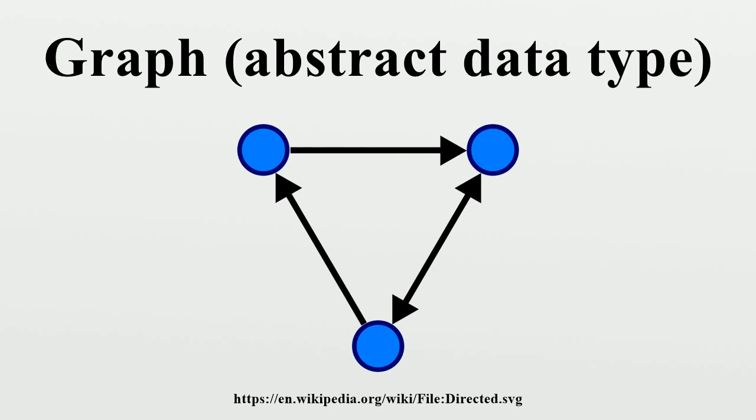The following table gives the time complexity cost of performing various operations on graphs for each of these representations, with v the number of vertices and e the number of edges.